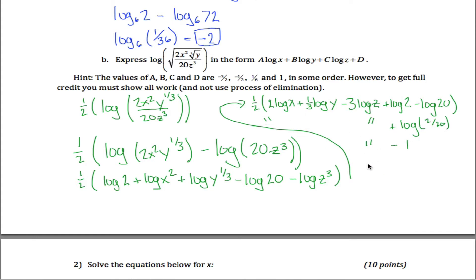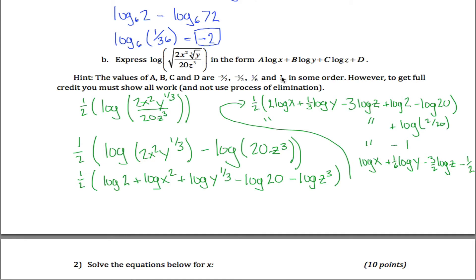Taking that one-half and distributing it through everything: one-half times 2 gives 1 log of x; one-half times one-third gives one-sixth log of y; one-half times negative 3 gives negative three-halves log of z; and one-half times negative 1 gives minus one-half. So the coefficients are: a equals 1, b equals one-sixth, c equals negative three-halves, and d equals negative one-half.